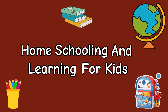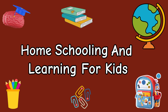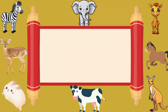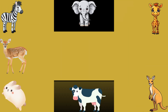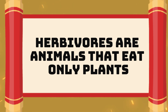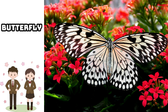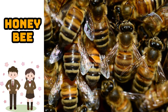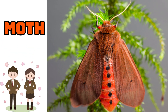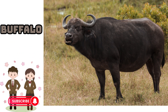Home schooling and learning for kids. In this video we will learn about herbivorous animals. Herbivores are animals that eat only plants. We are giving some examples. This is butterfly. This is honeybee. This is moth. This is buffalo.